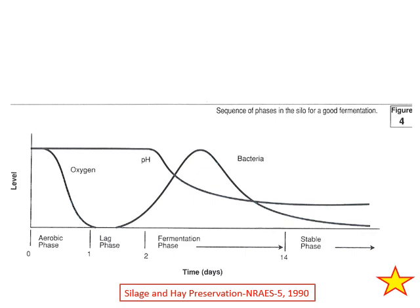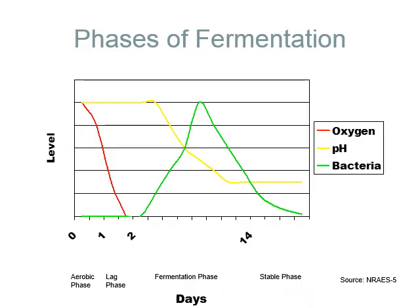We recreated the same chart with colors so you can see that the oxygen goes down while the bacteria curve comes up — these are two different lines. In the previous slide they may have looked like they were together, but they're not; one is not a continuation of the other. And you've got the pH level falling down. With the colors you can clearly see where the curves are.